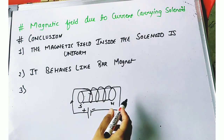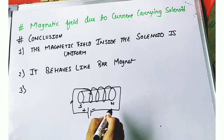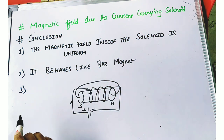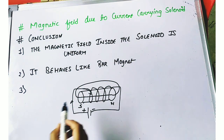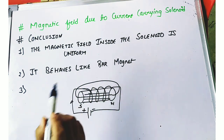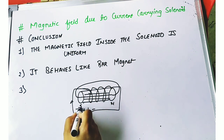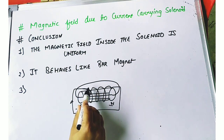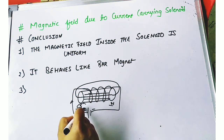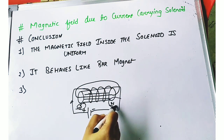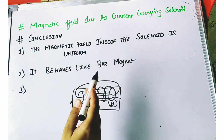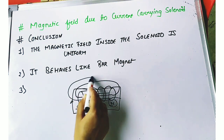If the current is entering from one side in a clockwise direction, it behaves as a south pole; the other end where current exits in an anticlockwise direction behaves as a north pole. Magnetic field lines always travel from north to south outside the magnet, and from south to north inside. Inside the solenoid the field lines are uniform. One side is south pole and the other is north pole — so alternating south, north, south, north — but practically where current enters is the south pole and where it leaves is the north pole.